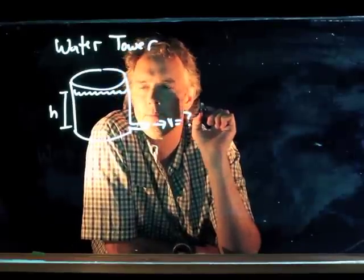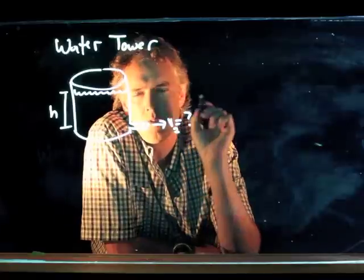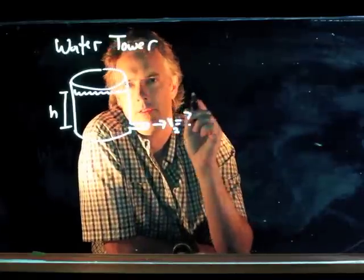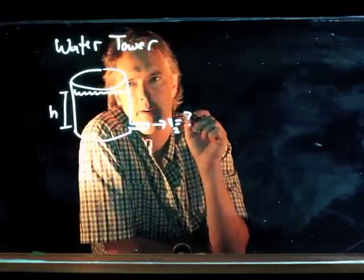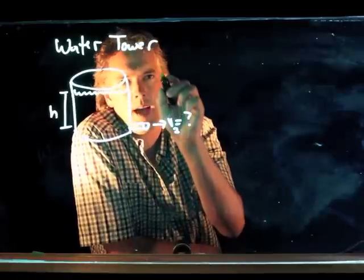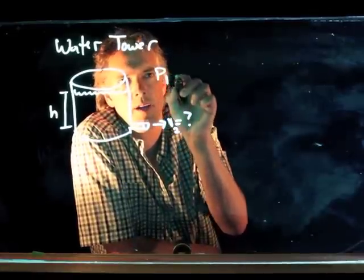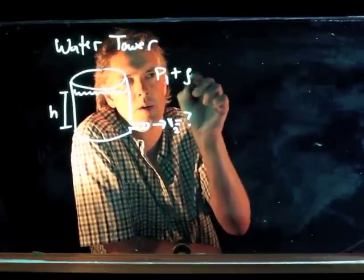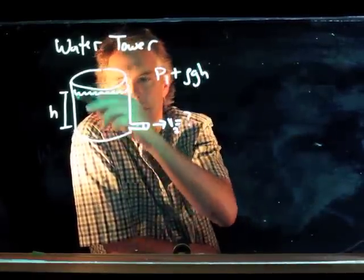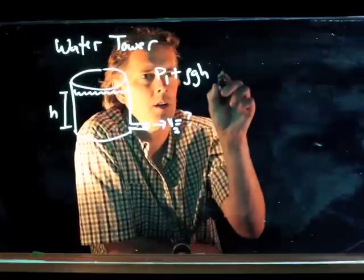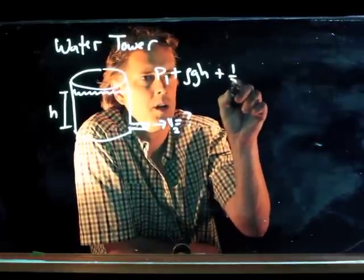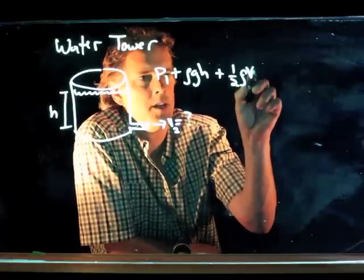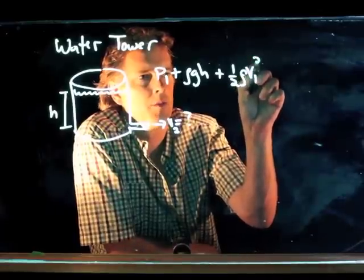V equals what? Let's call that V2 to be specific. So up at the top of the tower, we have pressure one plus rho gh — it's up at height h — plus one-half rho V1 squared.